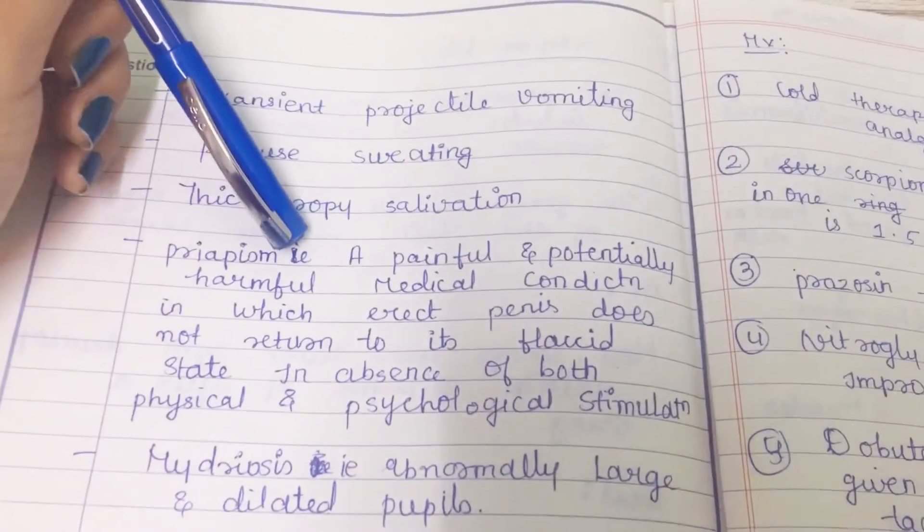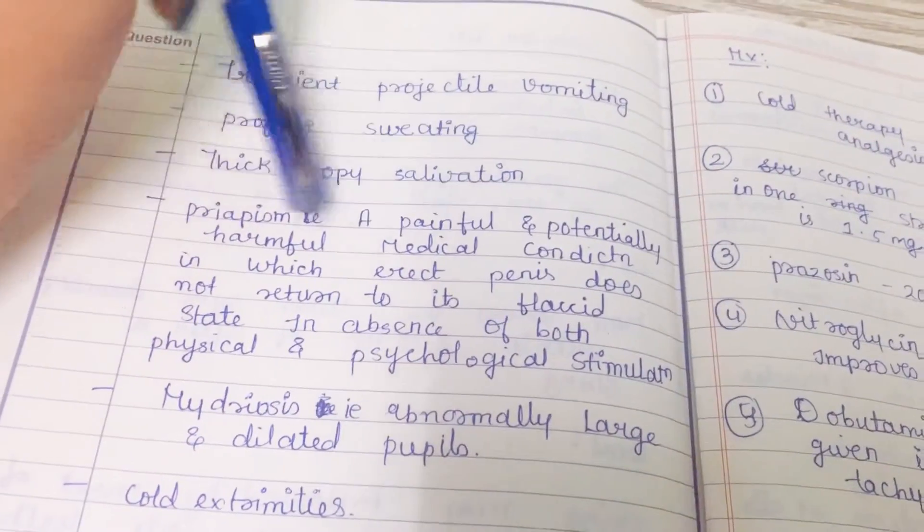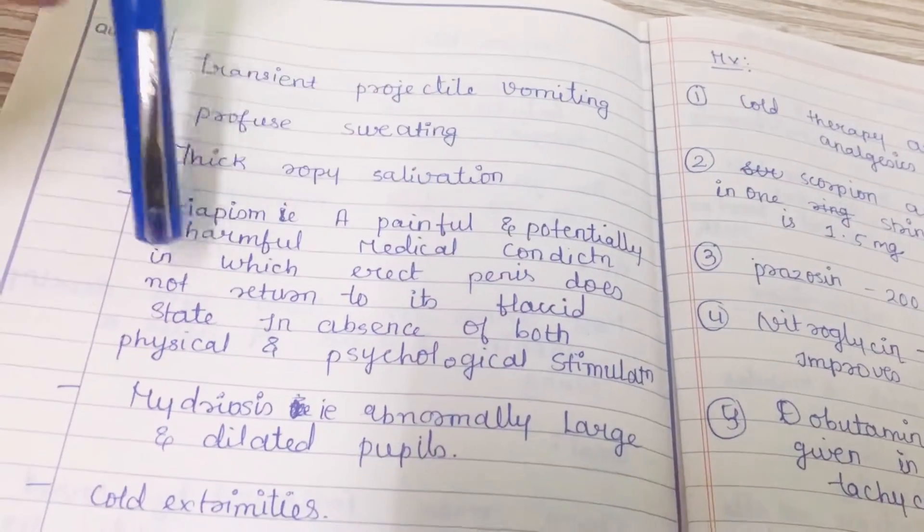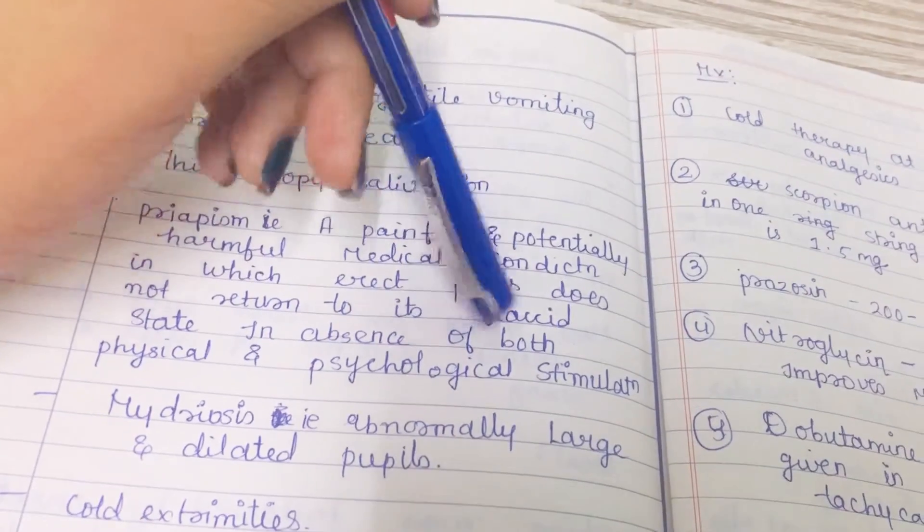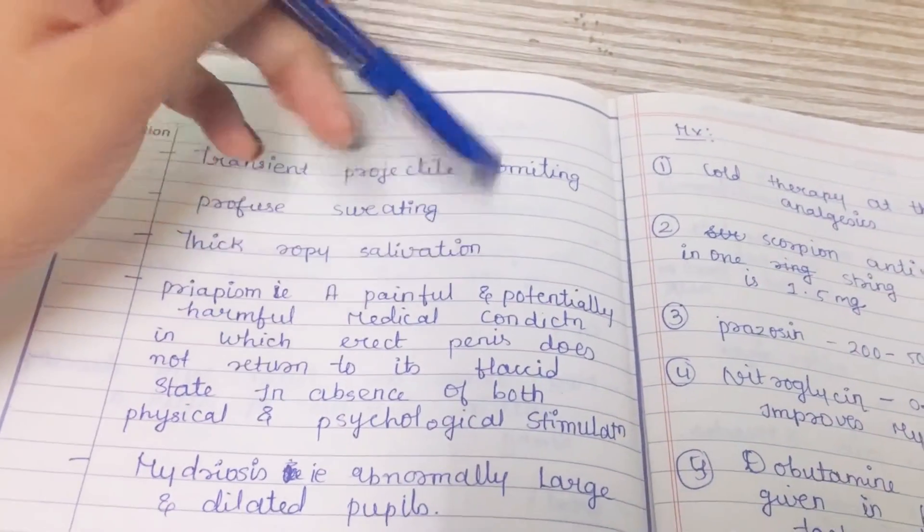Priapism will occur. What is priapism? A painful, potentially harmful medical condition in which erect penis does not return to its flaccid state. It will not return by physical or psychological stimulation to its normal state.